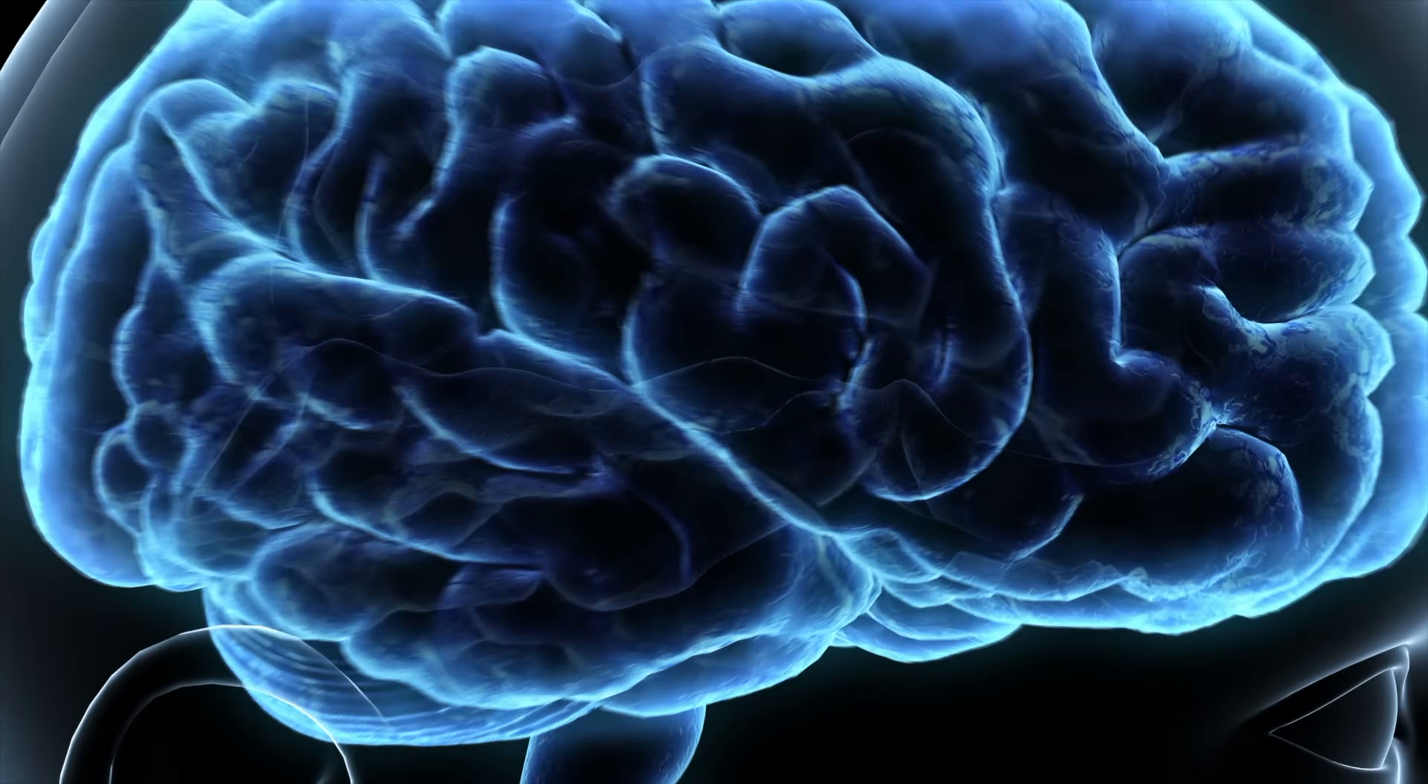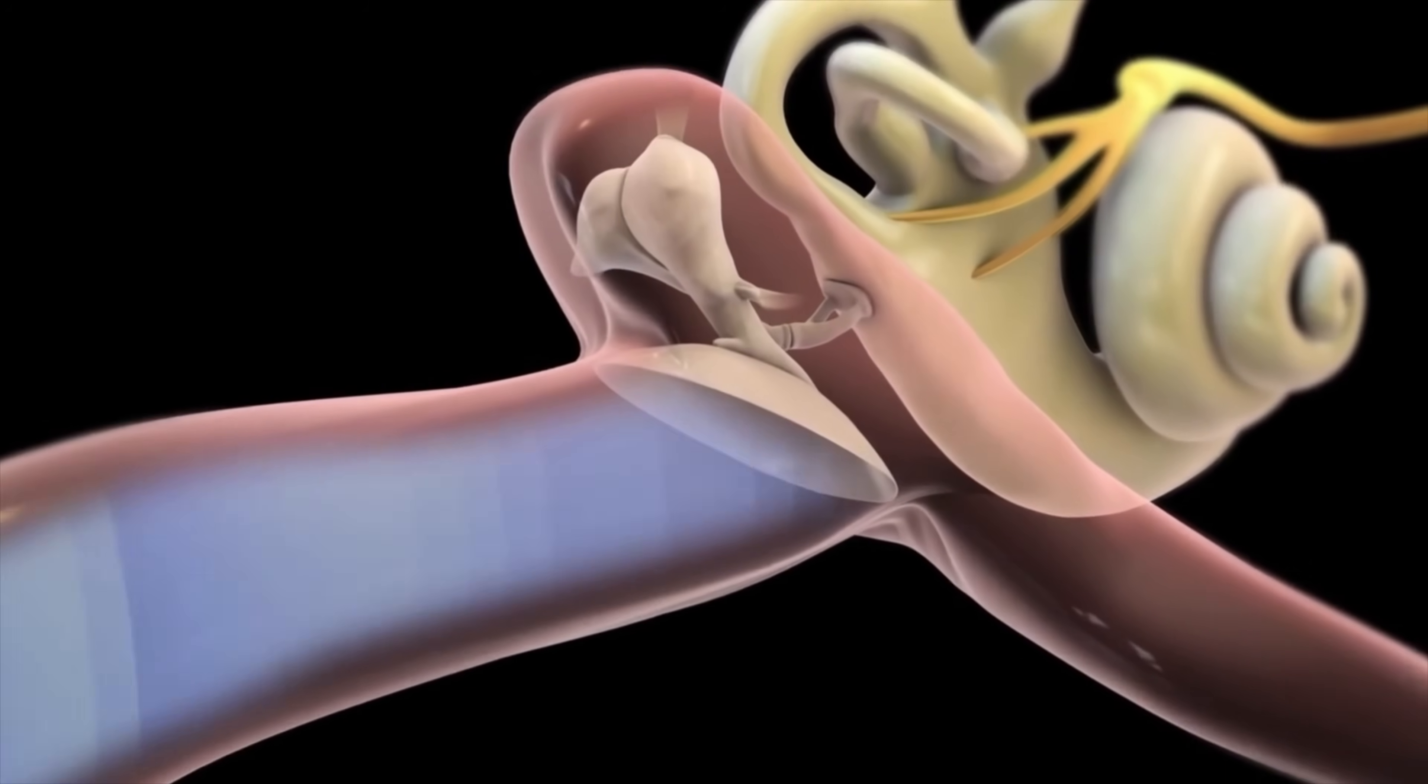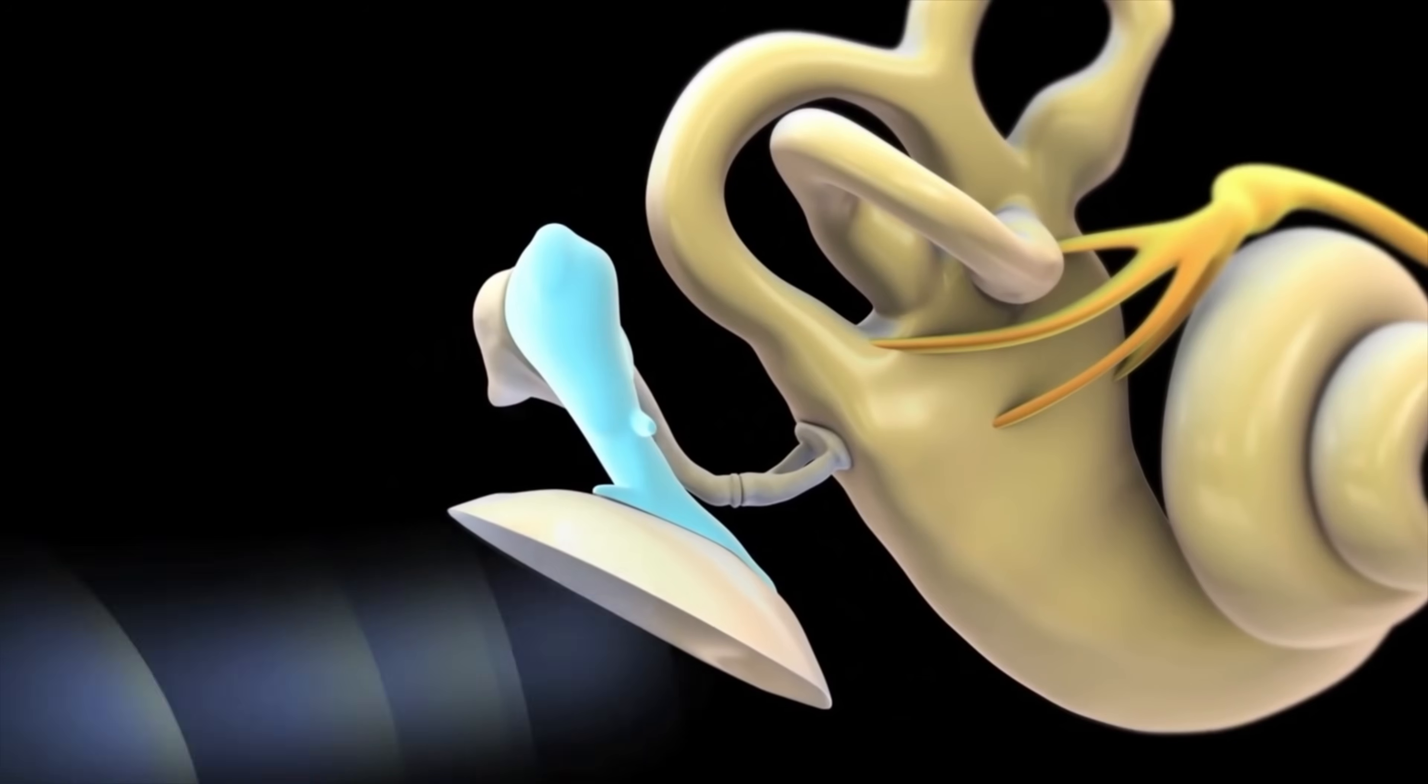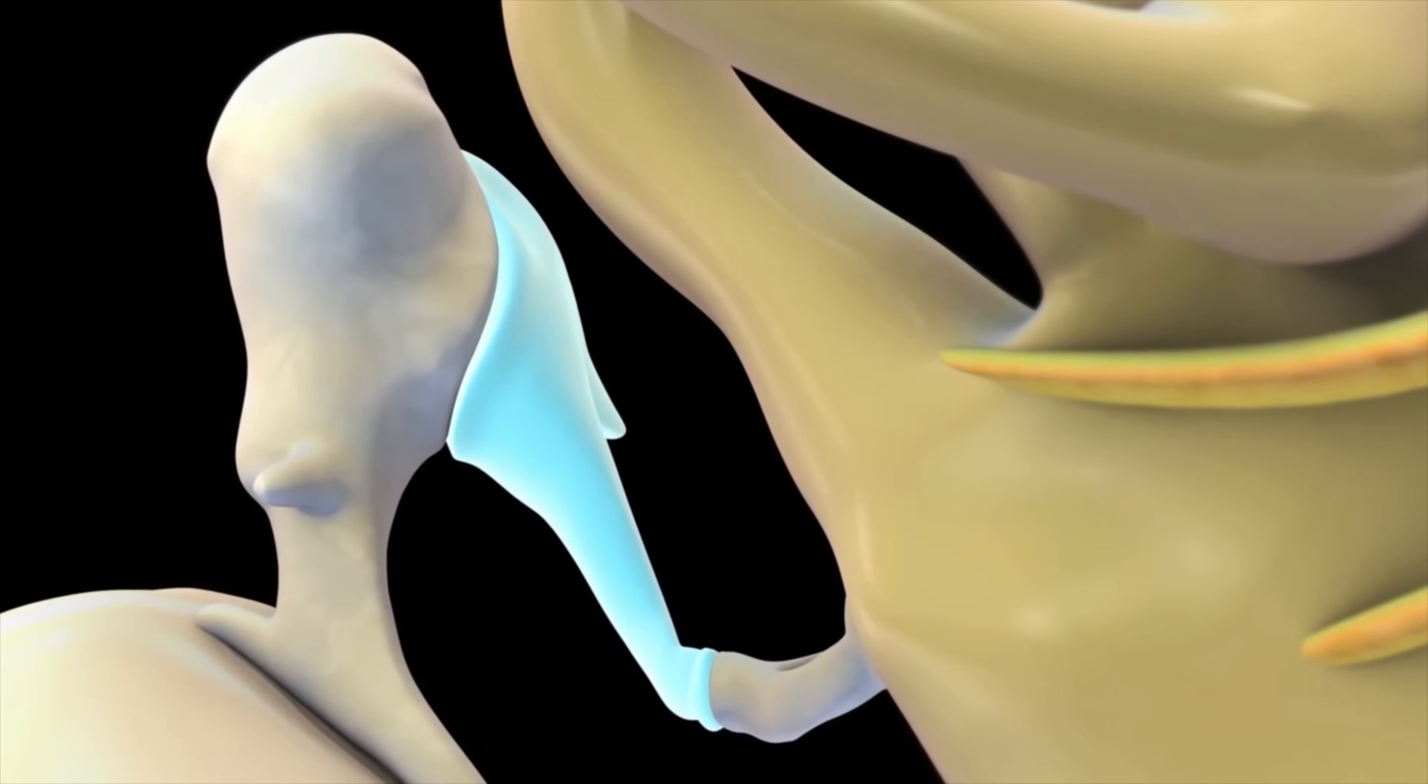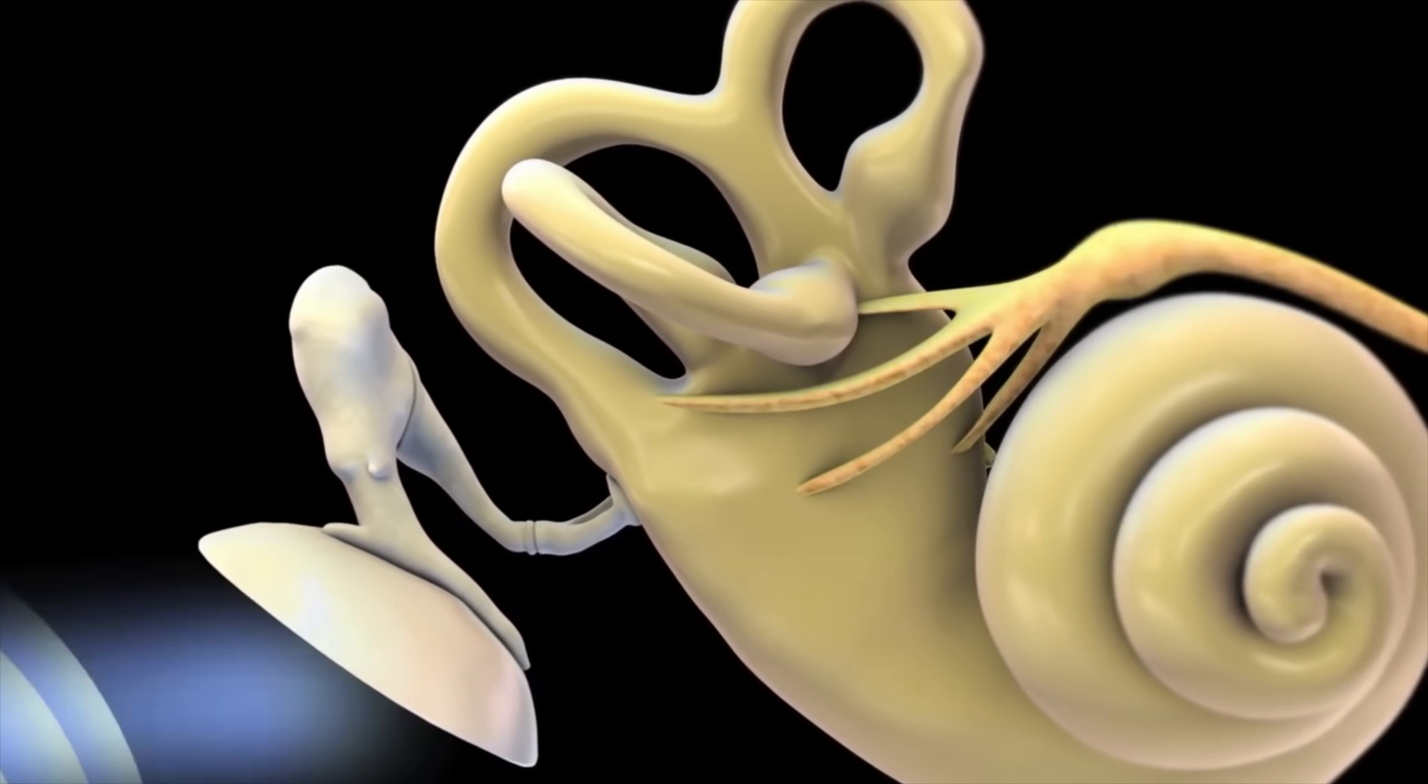Normally, hearing sounds of any kind only occur when sound waves enter the ear canal, vibrate the eardrum, which moves the middle ear bones, stimulating the cochlea, which finally triggers a nerve signal that goes to the brain.